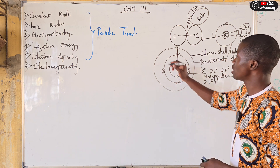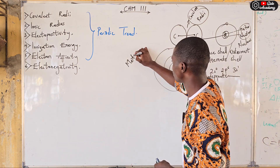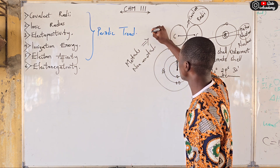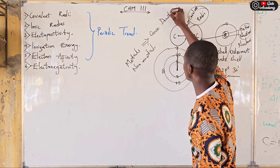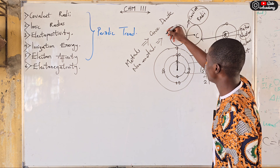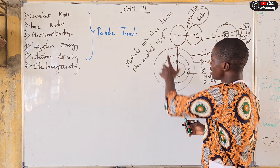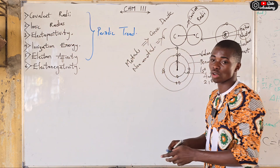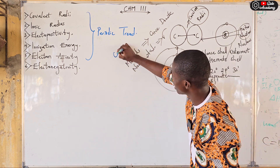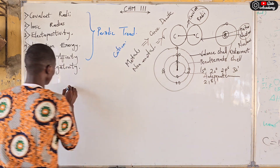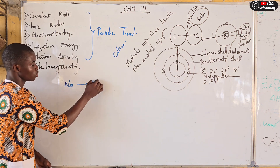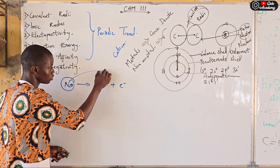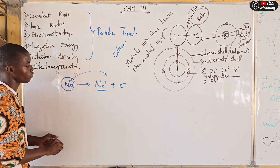Majorly, elements in the periodic table are metals and non-metals. Metals have the tendency to give out electrons — that is, to donate electrons — while non-metals have the ability to gain electrons. When metals give out or donate electrons, this is referred to as electropositivity, and the element itself is called an electropositive element, also referred to as a cation. For example, when sodium gives out one electron, you have sodium-plus and one electron — sodium becomes a positively charged atom. This is called electropositivity.